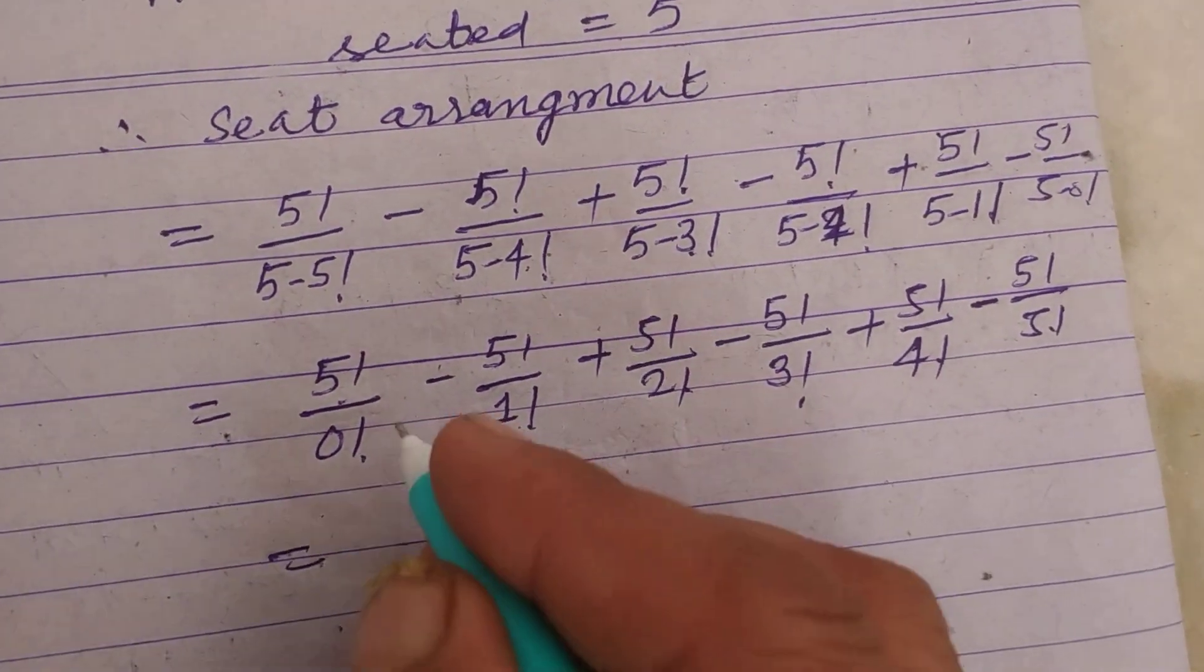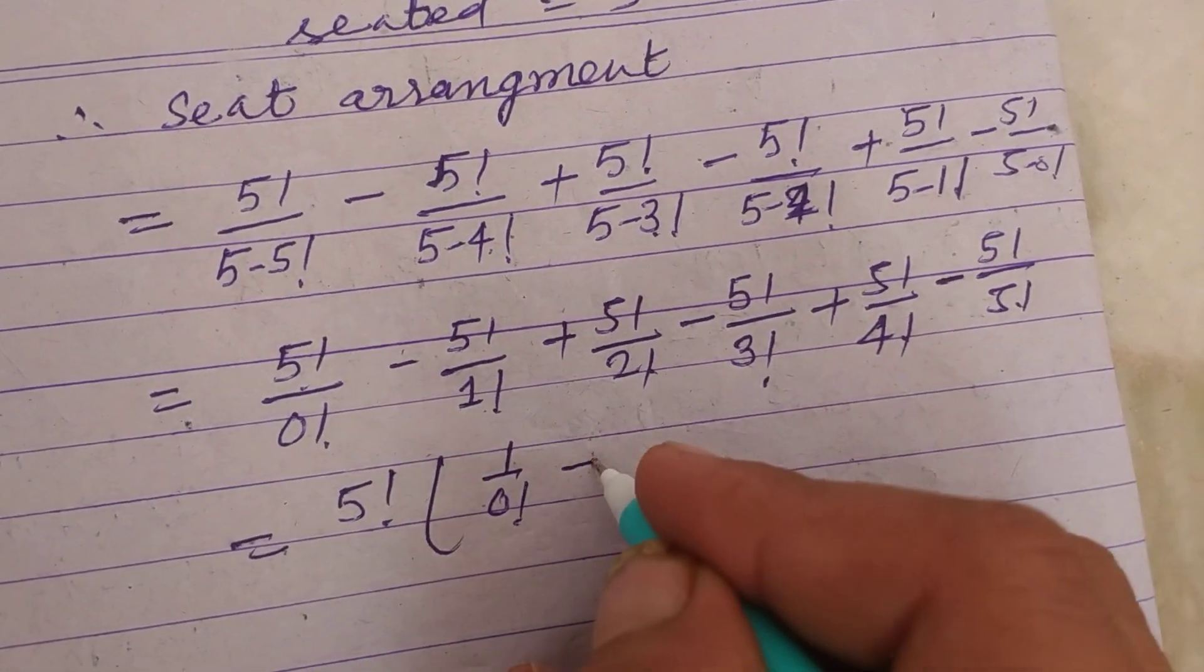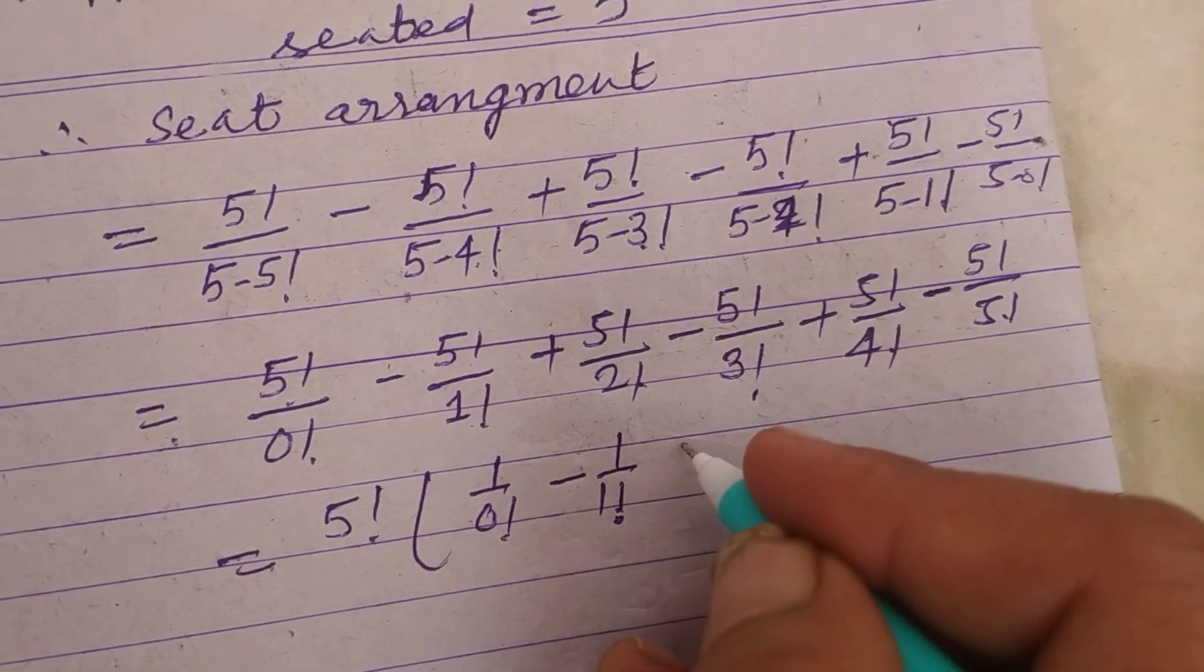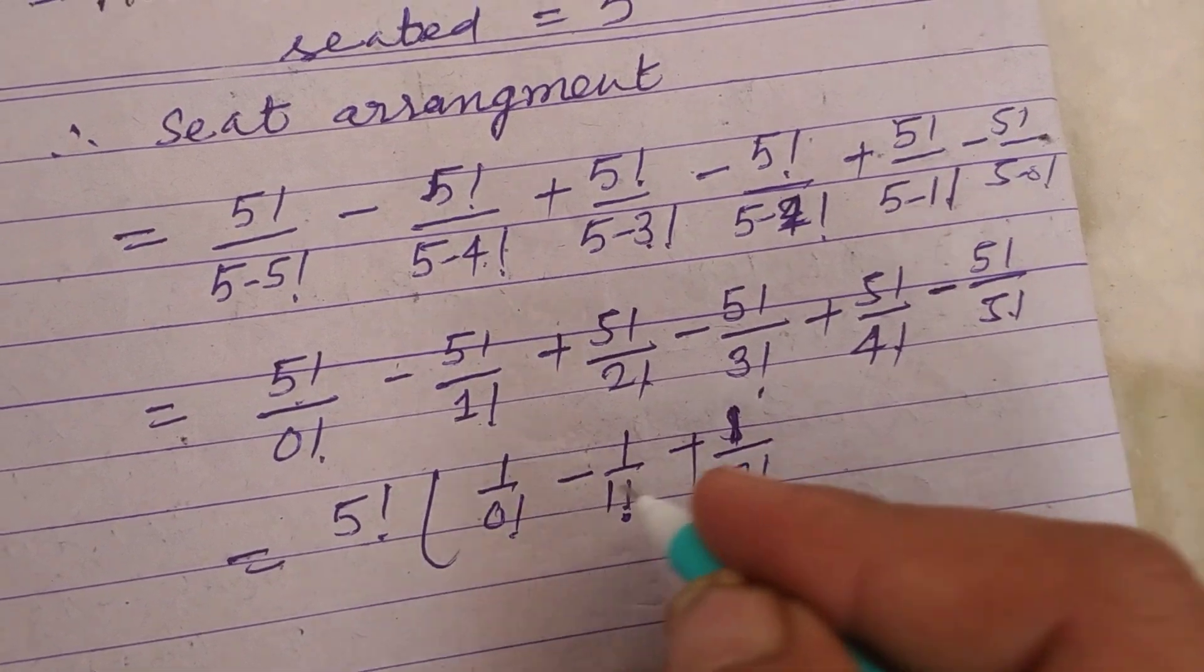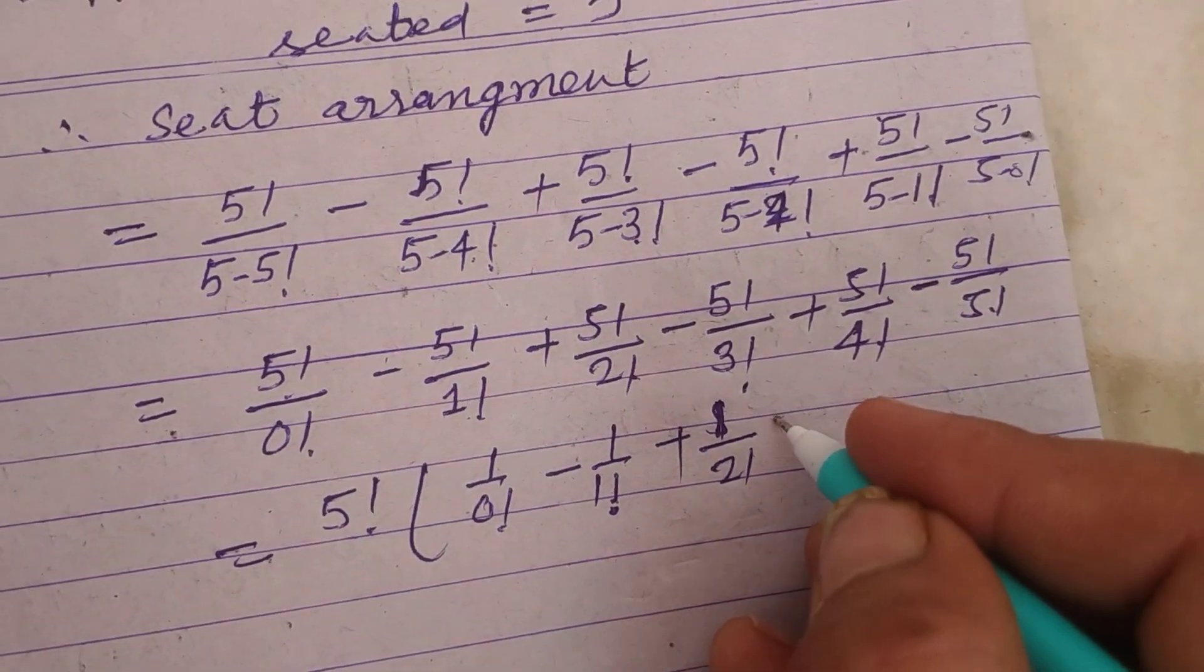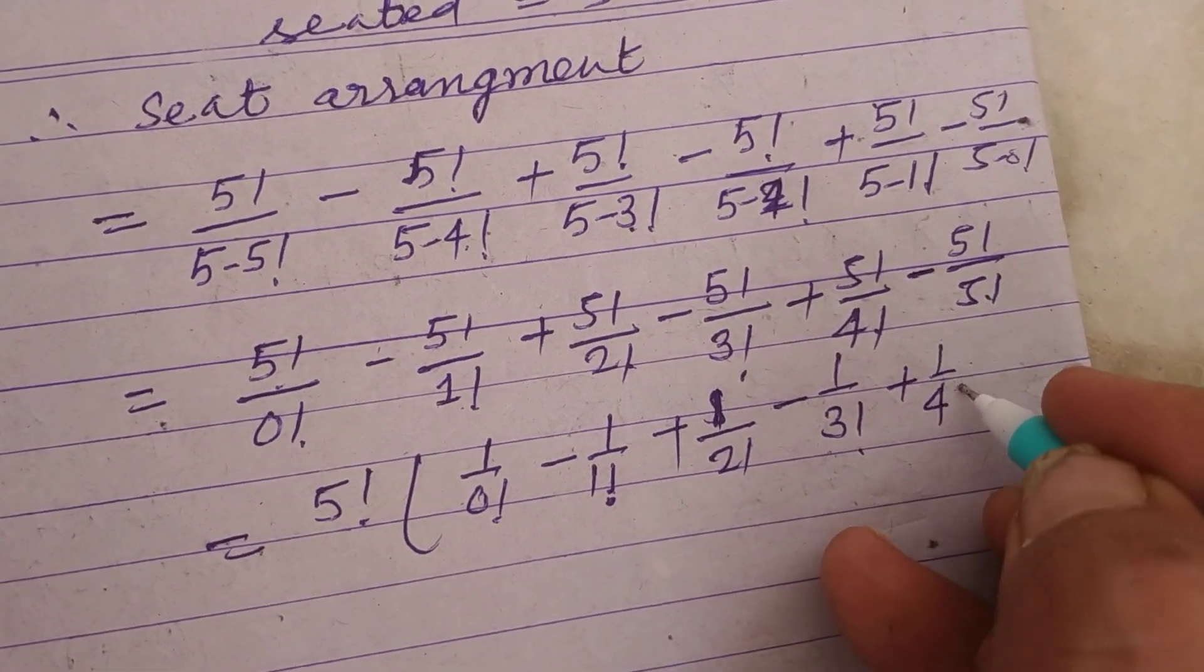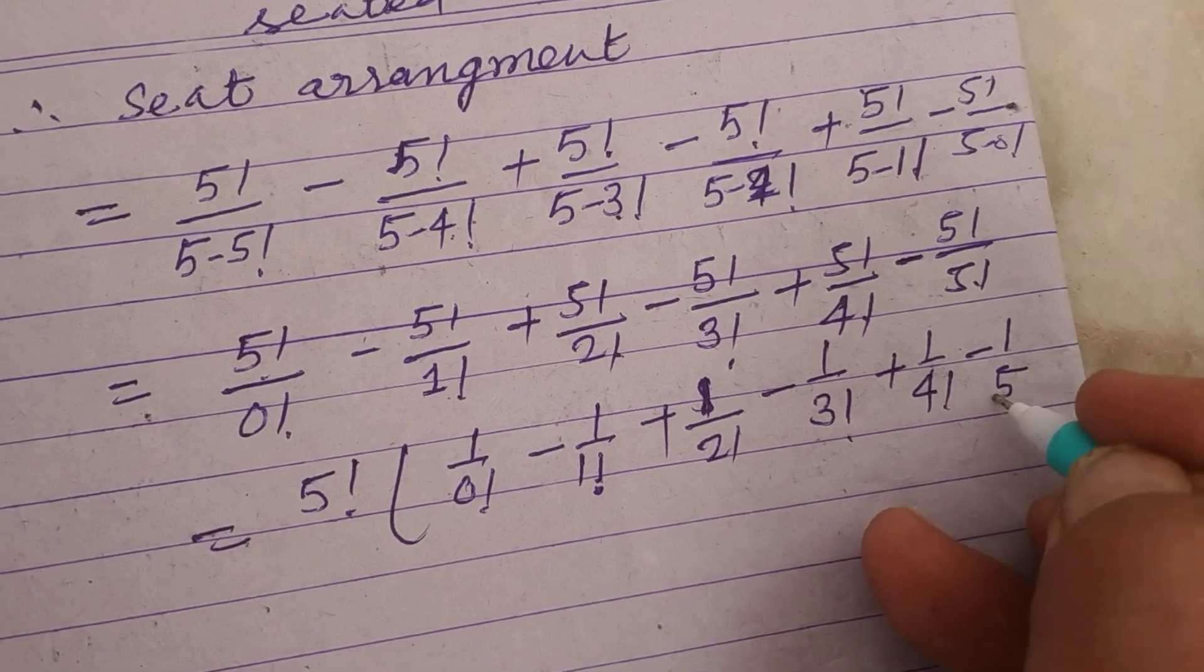Since 5! is common in all steps, we can factor it out. This becomes 5! times (1/0! minus 1/1! plus 1/2! minus 1/3! plus 1/4! minus 1/5!).